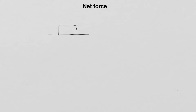Let's start with the definition of a net force. Imagine you have an object — for example, a wooden box placed on a flat horizontal surface — under the action of several forces. Let's say two forces: F1, pulling horizontally to the right, and F2, pulling vertically up.